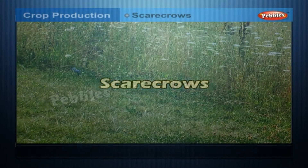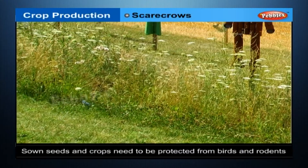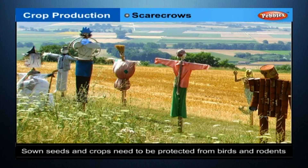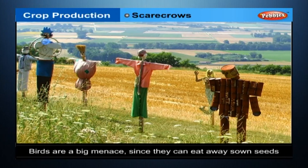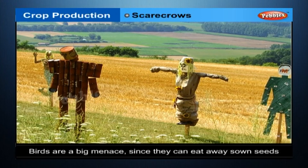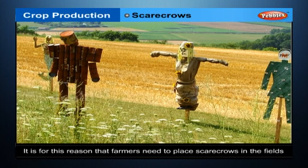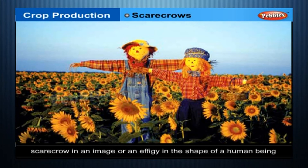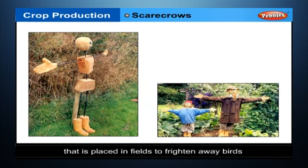Scarecrows: sown seeds and even crops need to be protected from birds and rodents. Birds are a big menace since they can eat away sown seeds. It is for this reason that farmers need to place scarecrows in the fields. A scarecrow is an image or an effigy in the shape of a human being that is placed in fields to frighten away birds.